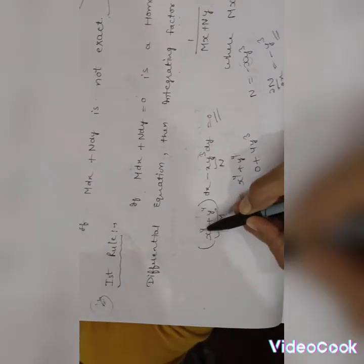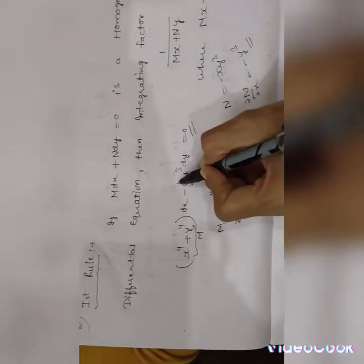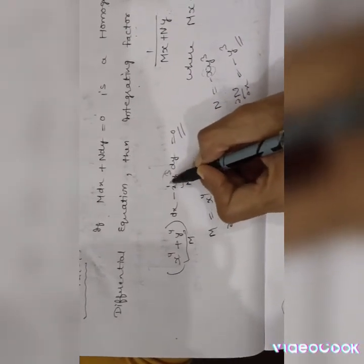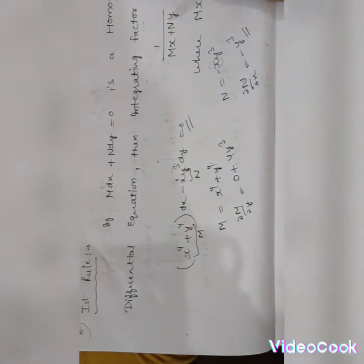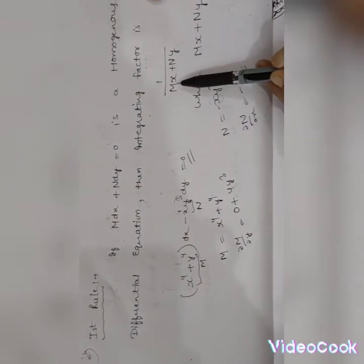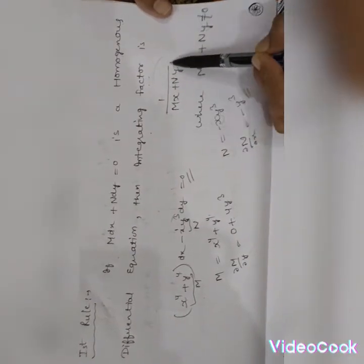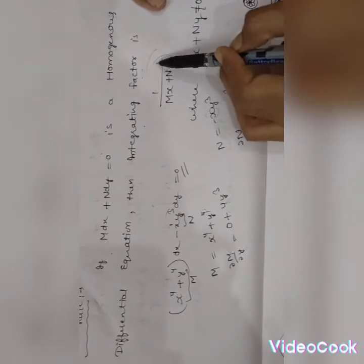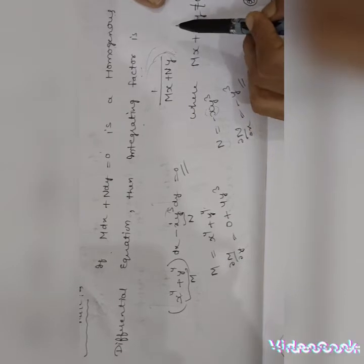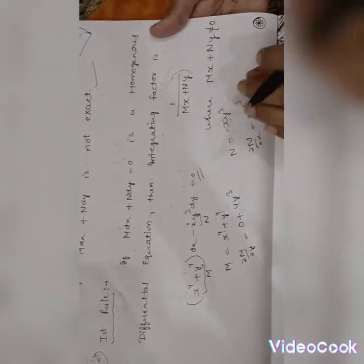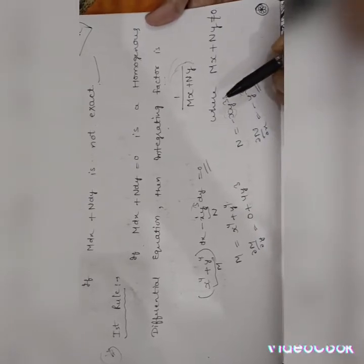Check that it is homogeneous: x⁴ and y⁴ have degree 4; x¹ and y³ have degrees 1+3 = 4. So it is a homogeneous differential equation of degree 4. Therefore, the integrating factor is 1/(Mx + Ny), where we substitute the values of M and N.